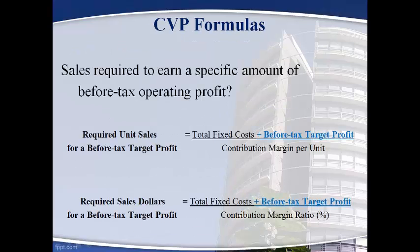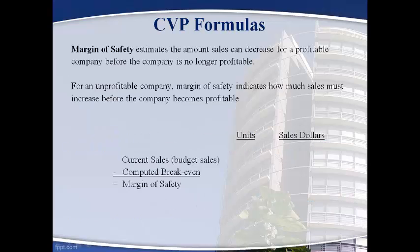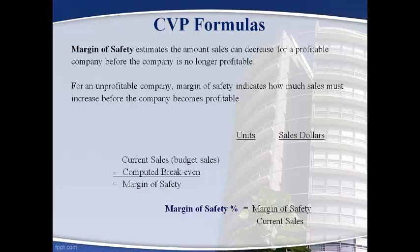Most owners are not satisfied with earning no profit. Once management knows the sales required to breakeven, the next question is how many sales are required to earn a certain desired profit. The same breakeven formula is used and the desired profit is added, giving the sales required to cover fixed cost with the target profit left over. Margin of safety estimates the amount current sales can decrease before the company is no longer profitable, and is also used to estimate how much sales must increase to become profitable when a company is losing money. The margin of safety percent is the percentage sales must change for the company to lose money, and can be computed using sales in units and total sales dollars.